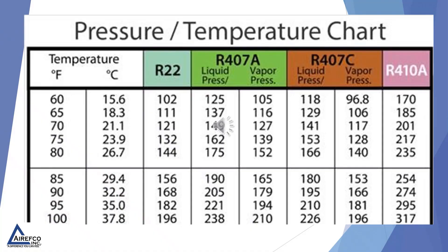When looking at your refrigerator PT chart, you'll notice that some refrigerants have a single column and some have a dual column. For example, R407A has a liquid pressure and a vapor pressure. Why is that, and what do we use them for? That's what we're going to look at in this video.